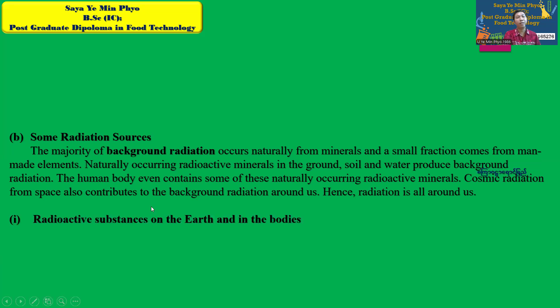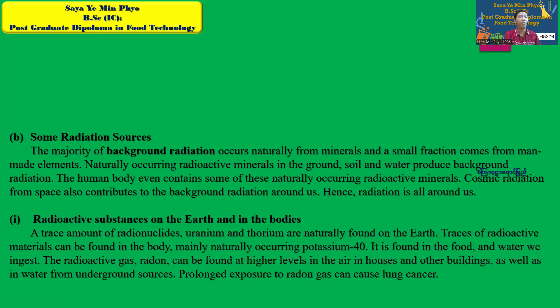Radioactive substances are found on the earth and in the body. Radionuclides are naturally formed in the body. Natural potassium is one such radionuclide found in the body, and we also ingest certain radioactive isotopes through food.